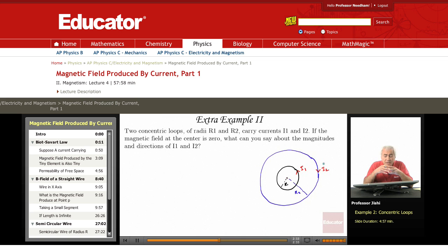So we deduce that if I1 is counterclockwise, then I2 must be clockwise, and vice versa. If I1 is clockwise, then I2 must be counterclockwise. So the two currents go in different directions. It has to be so if the magnetic field is zero at the center.